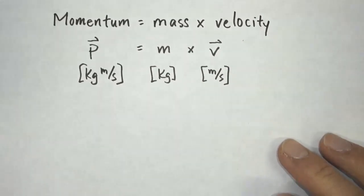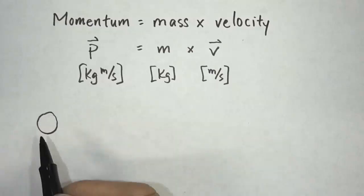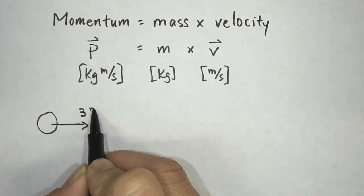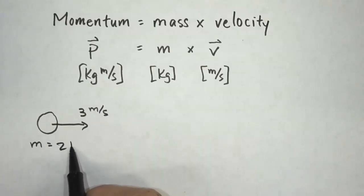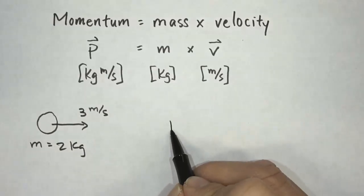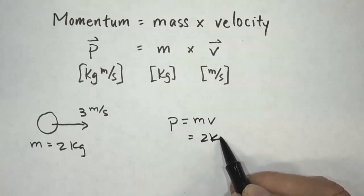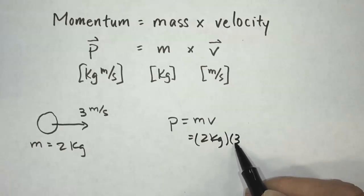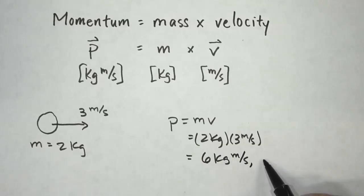So now let's take a look at an example. Let's say we have a ball, and it's moving to the right at 3 meters per second, and the ball has a mass of 2 kilograms. So what is the momentum? The momentum, which is mass times velocity, in this case, would be 2 kilograms times 3 meters per second. And we would have a momentum of 6 kilograms meters per second, and it has a direction. So we're going to say, in this case, it's going to be to the right.